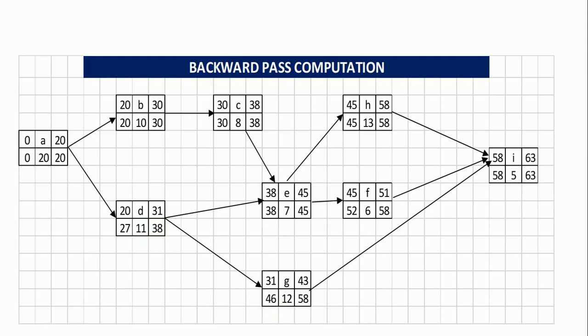In the same way, B and D have a relation with A. Out of 20 and 27, which one is smaller? 20. That is why we have 20 here. 20 minus 20 will give us 0. This is the end of the backward pass computation.